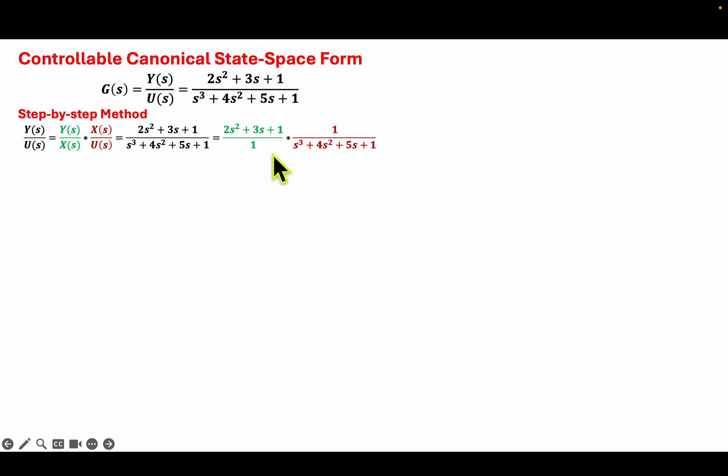And the next thing is to decompose this transfer function model into two parts, that is the numerator part and the denominator part. So comparing this side and this side, I will have equation 1, which is Y over X as the numerator part and the denominator part will be equation 2.